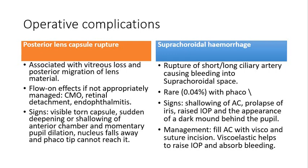Now let's look at operative complications — those that can happen during surgery. The first is posterior lens capsule rupture, often associated with vitreous loss and posterior migration of lens material. If not managed appropriately it can lead to cystoid macular edema, retinal detachment, or endophthalmitis. Signs include a visible torn capsule, sudden deepening or shallowing of the anterior chamber, momentary pupil dilation, and the nucleus falling away out of reach of the phaco tip.